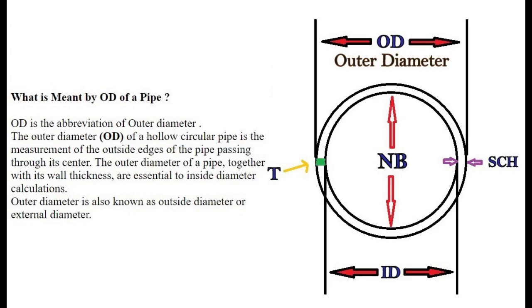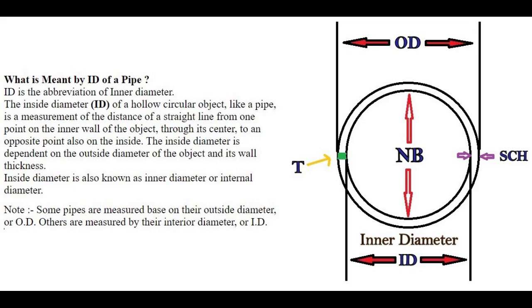The outside diameter of a pipe together with its wall thickness are essential to inside diameter calculations. OD, or outside diameter, is also known as external diameter. Now, what is ID of a pipe? ID is the abbreviation of inner diameter.